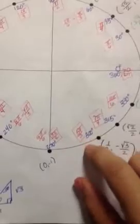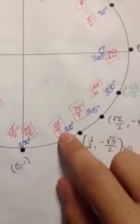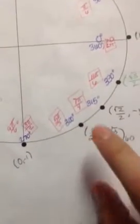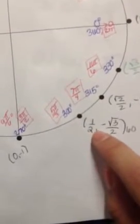And so 5 pi over 3 is right here and it's a cosine. So you want to find, this is cosine and that's sine. So cosine of 5 pi over 3, negative 5 pi over 3 is 1 half because it's in the cosine spot. So your answer is also 1 half again.